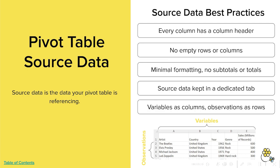Typically, with larger data sets, we have far more observations than we have variables. Since we typically read and understand information in a top-to-bottom format on computers, it makes the most sense for our data set to extend downwards instead of rightwards.